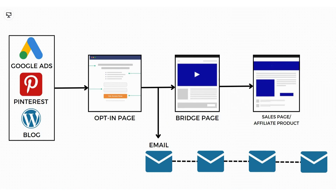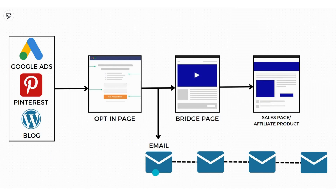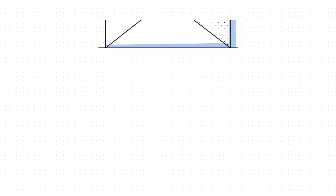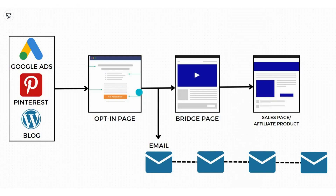We are going to create a two-page funnel: the first is the opt-in page and the second is the bridge page. The final page is the sales page or the product page. We will get traffic — paid or free — and drive it to an opt-in page, also known as the squeeze page, which we will create ourselves. On this page, we will try to get contact information, most importantly the visitor's email address. To get it, we provide them with free resources like free ebooks or free courses. Once they submit their email address, it goes to our autoresponder so we can use it for email marketing.